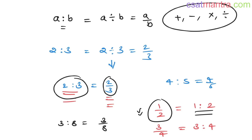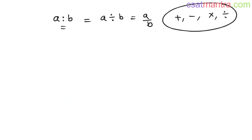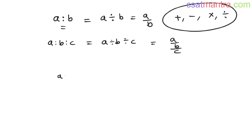If you get one by two, you can write it as one is to two. If you get three by four, you can write it as three is to four. Now for three terms A, B, C in the ratio A is to B is to C, you cannot write them as A divided by B divided by C — this is absurd.